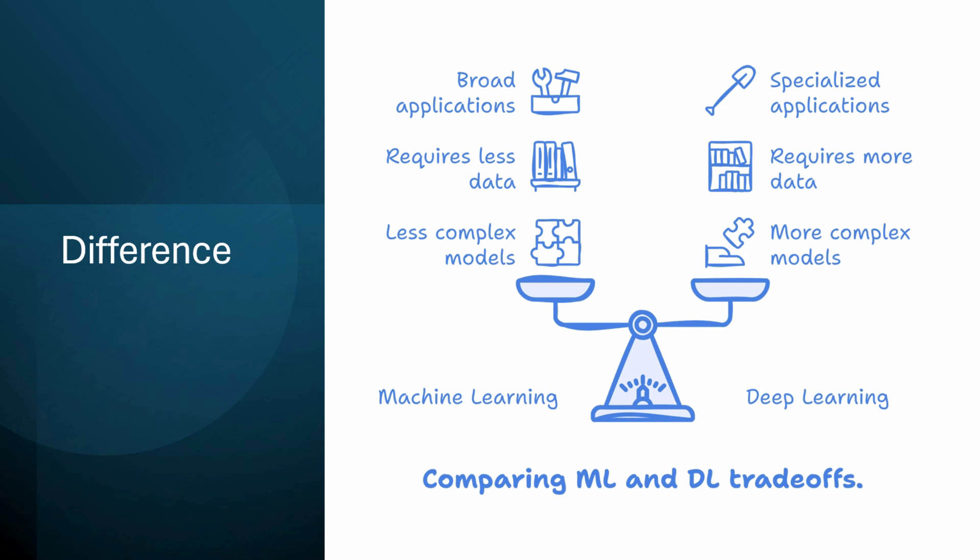A key distinction between the two is how they approach feature discovery. Machine learning can be compared to instructing a child to look for yellow curved objects to find bananas, where the features—color and shape—are explicitly provided. Deep learning, however, is more like allowing the child to figure out what makes a banana identifiable without being told. This ability to learn features autonomously is what allows deep learning to excel in more sophisticated tasks.